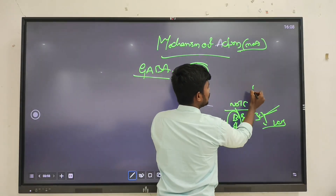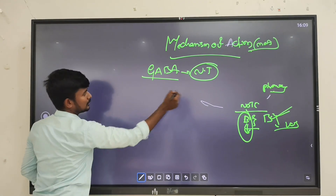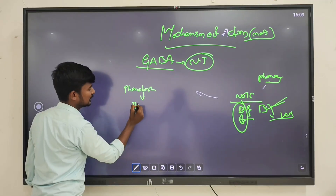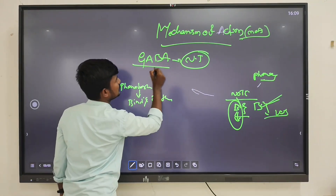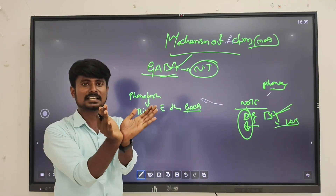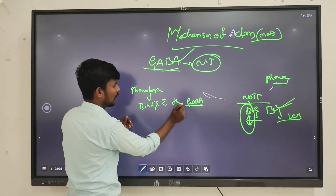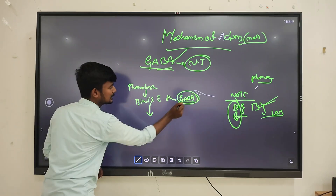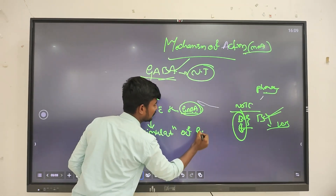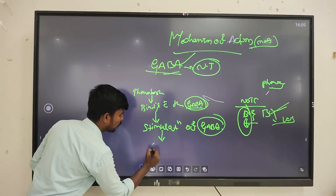We take the example of phenobarbitone. This will directly go and bind with the GABA receptor, which is present as a neurotransmitter in the synaptic vesicles of the neuronal end. When the barbiturate is administered via IV or IM, it binds with this GABA receptor. There is stimulation of this GABA receptor.